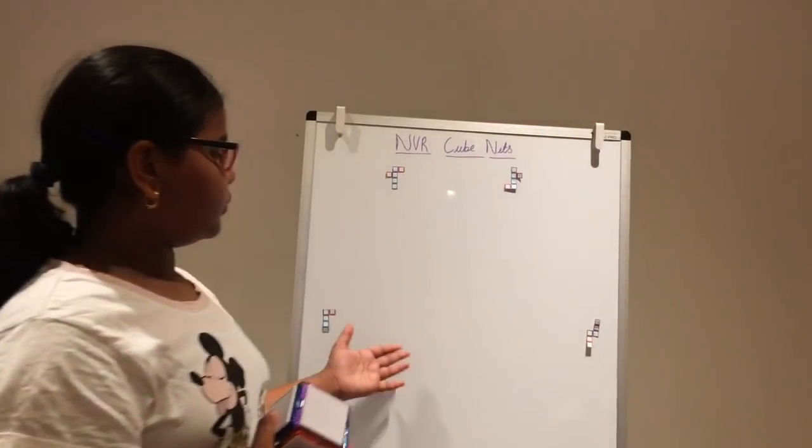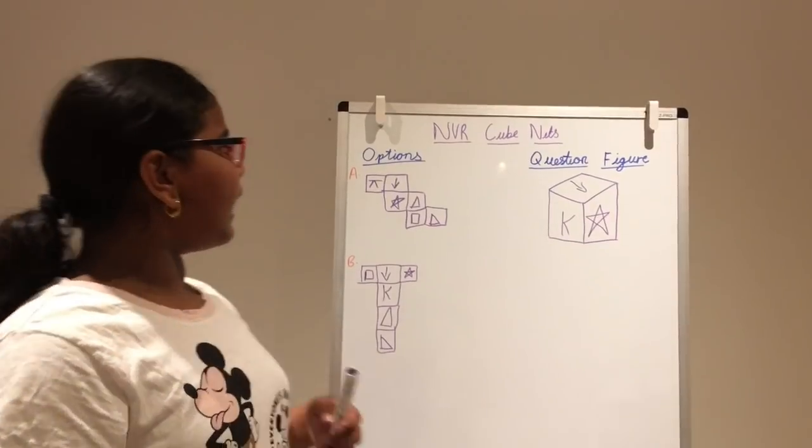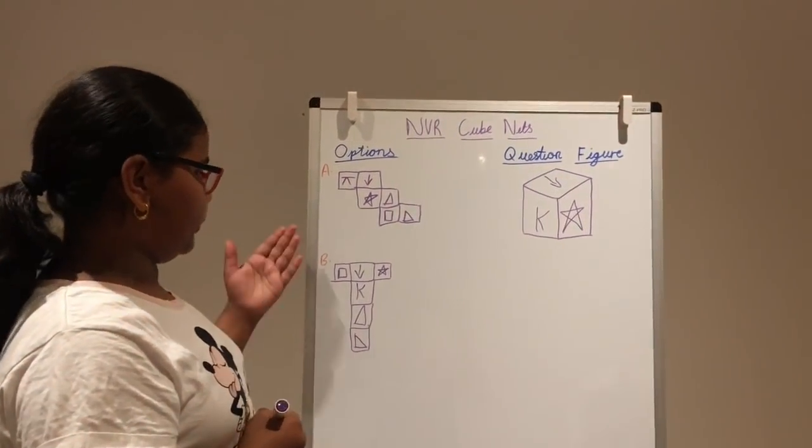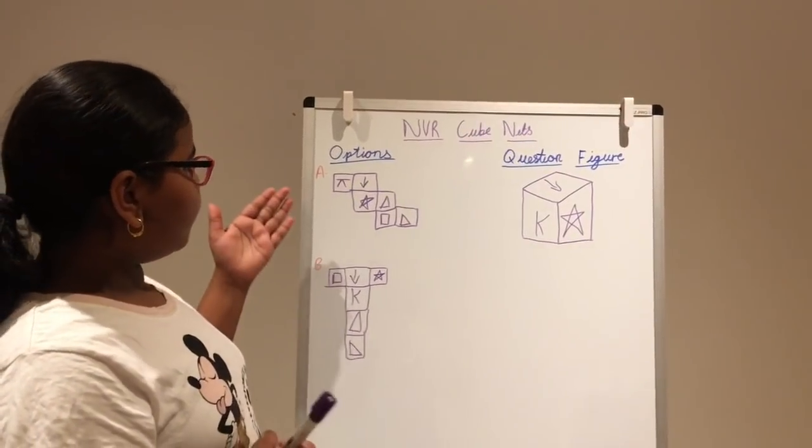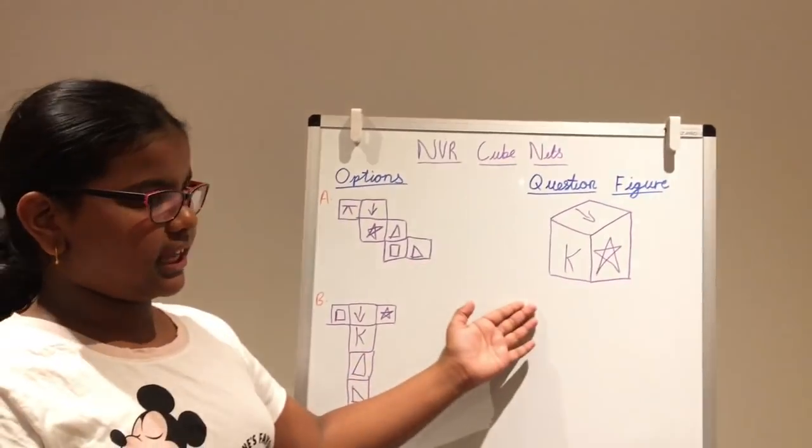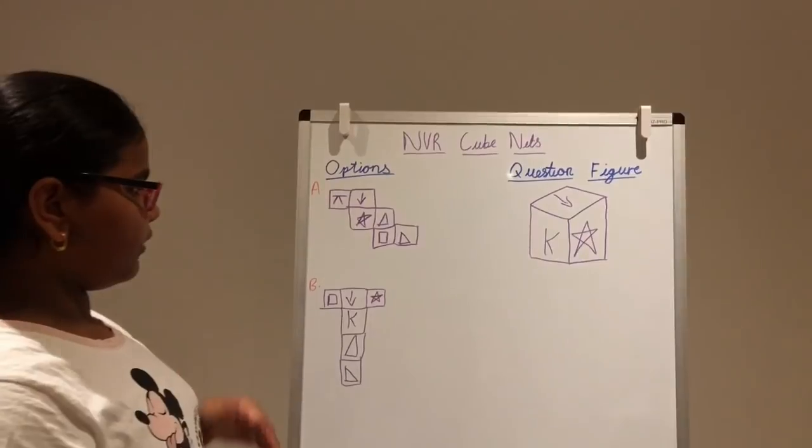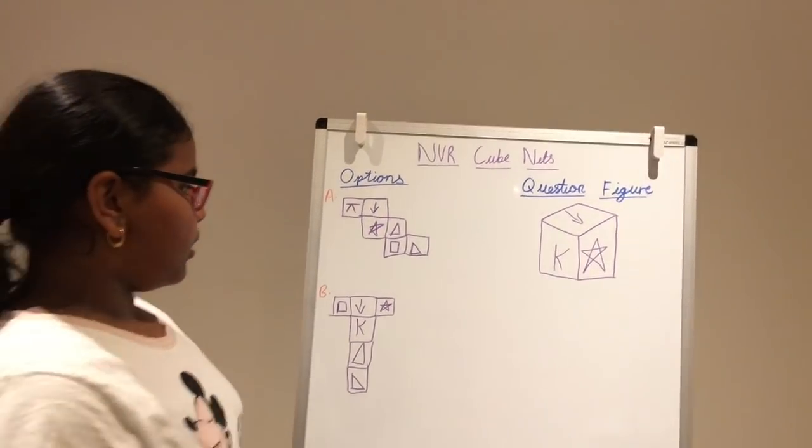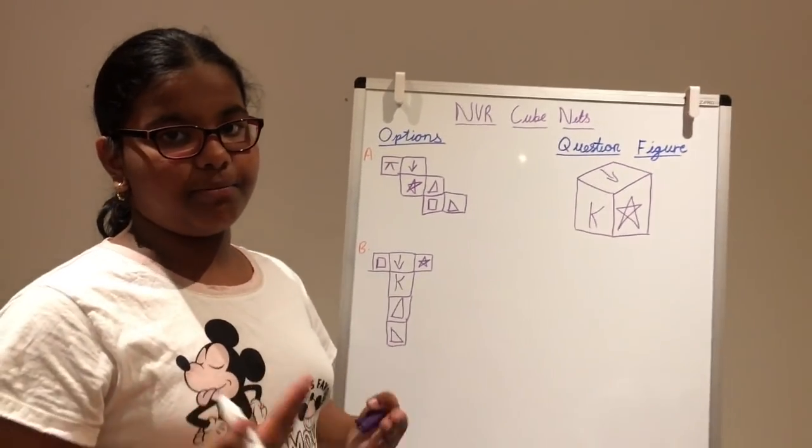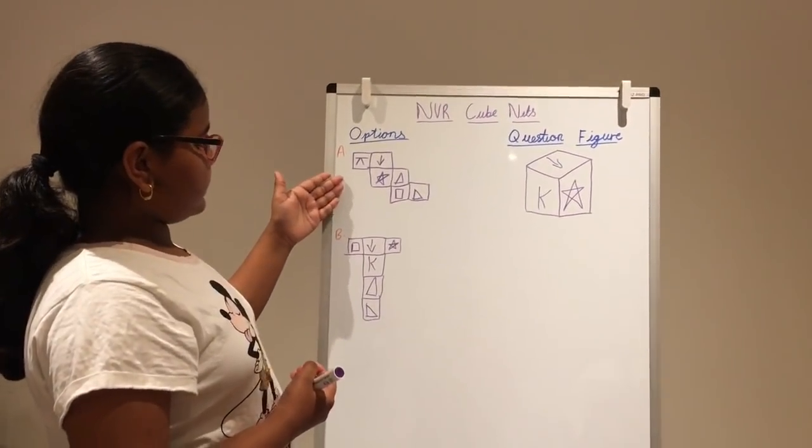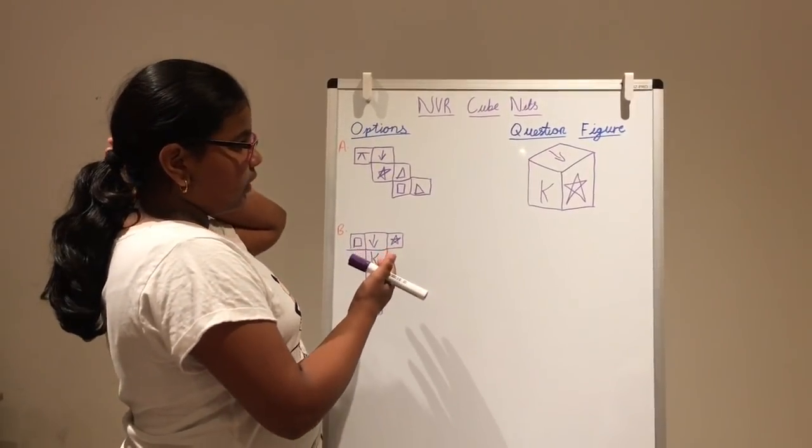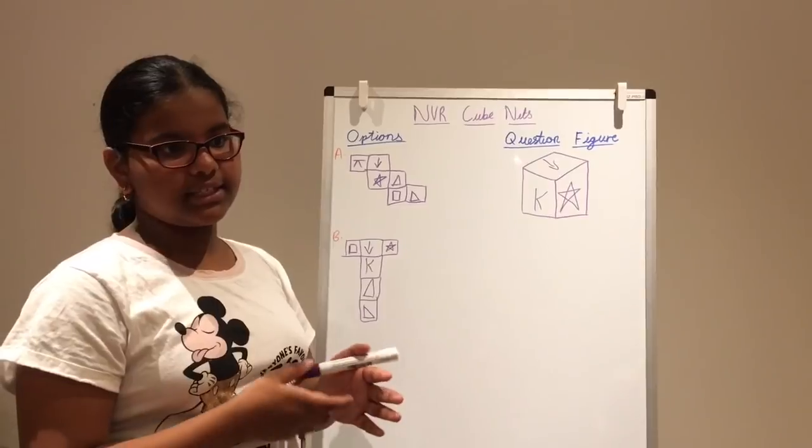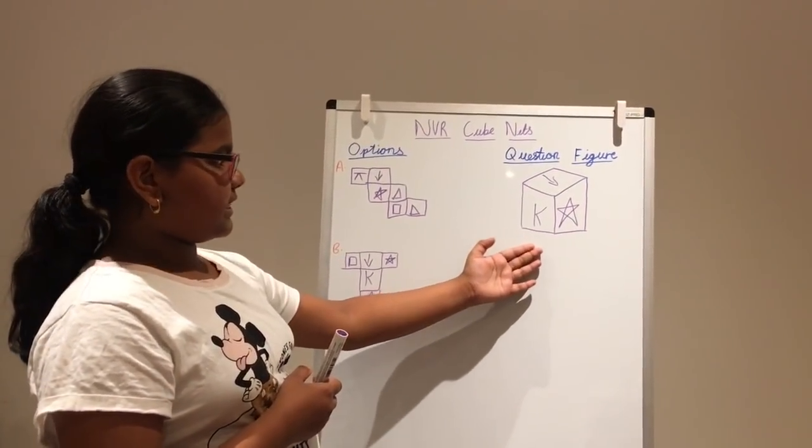Now, let's move on to the real non-verbal reasoning questions, which you'll get. Here, I have a non-verbal reasoning question, and on this side, I have a question figure, and on this side, I have options which are named A and B. So, one of these options have been folded to create this question figure. And now, we're going to find out which one of them was created. But, before we know that, we need to know one top tip, which is that two opposite sides will never meet. So, here, let's take option A.